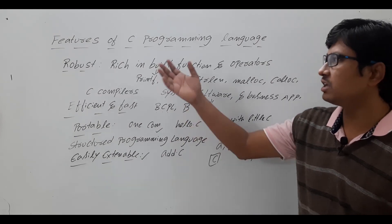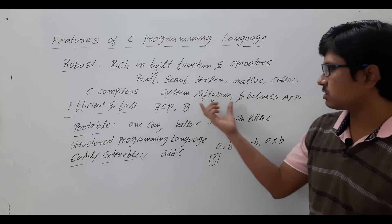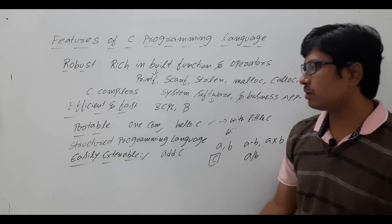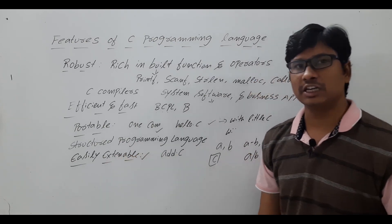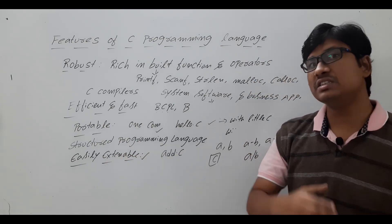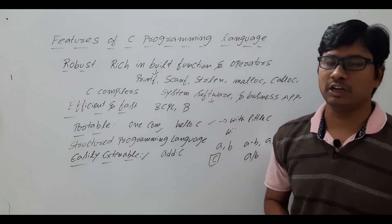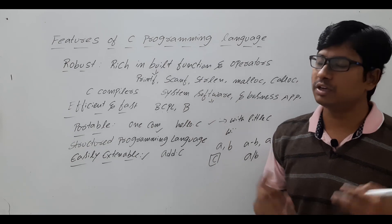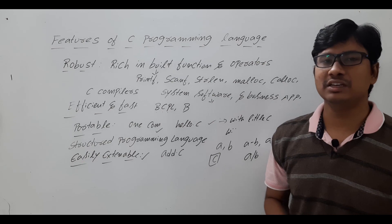To summarize, the features of C programming language are: it is robust, we can design system software and business applications, it is efficient and fast compared to previous programming languages, it is portable, it is a structured programming language, and it is easily extendable — you can write your own functions and add them to the library. I hope you have understood all the concepts. If you still have any doubts, feel free to ask in the comment section. I will try to clear your doubts within 24 hours. Thank you for watching. Have a nice day.